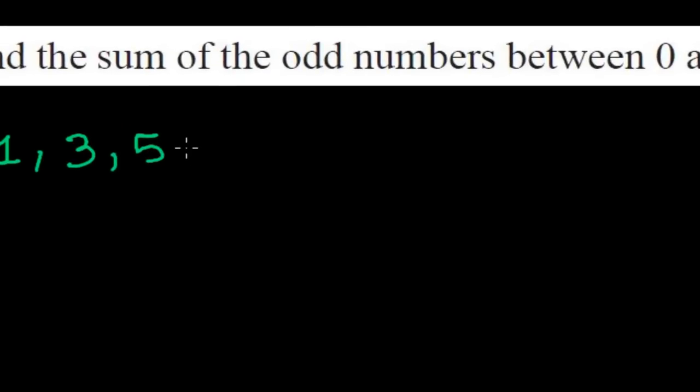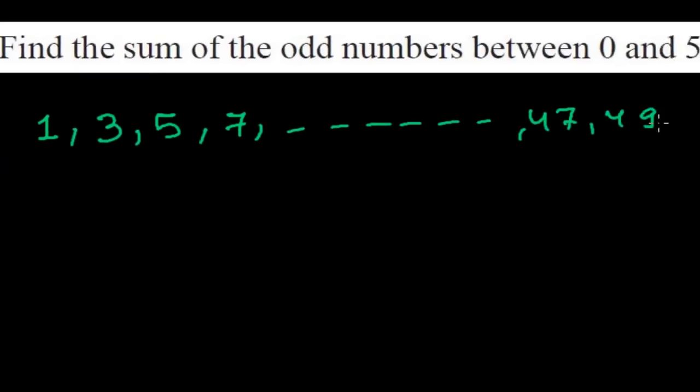Before that, let me write all the odd numbers between 0 to 50. The first odd number is 1, the second is 3, you might be laughing at these silly questions, but 1, 3, 5, and then 7, continuing to 47 and 49.